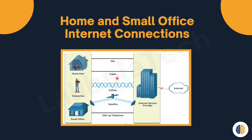The second one is cable connection. Cable connection is offered by cable television service providers. The internet data signal is transmitted on the same cable that delivers cable television. It provides high bandwidth, high availability, and an always-on connection to the internet.